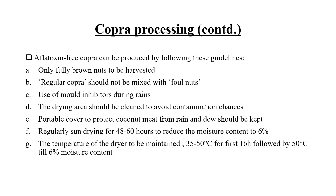The guidelines for producing aflatoxin-free copra include: using mold inhibitors during rain, ensuring regular copra is not mixed with foul nuts, regular sun drying for 48-60 hours to reduce the moisture content to 6%. If drying is done mechanically, for the first 16 hours the temperature of the dryer should be maintained between 35-50 degrees Celsius, followed by 50 degrees Celsius until 6% moisture content is reached.